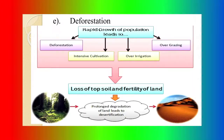The next ill effect is deforestation. Rapid growth of population leads to deforestation, intense cultivation, over-irrigation, and over-grazing. Because we have more cattle and more human mouths, we need to produce more, and ultimately land comes from the forest. This leads to loss of topsoil and fertile land. When natural ecosystems undergo prolonged land degradation, it leads to desertification.